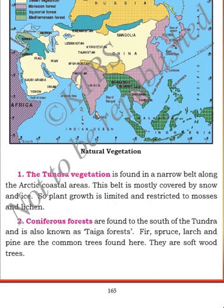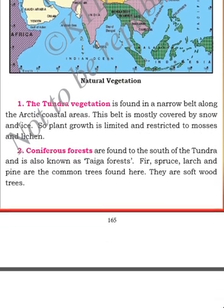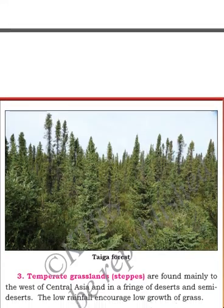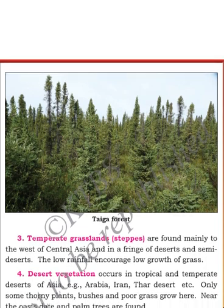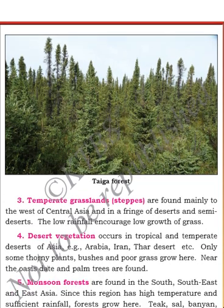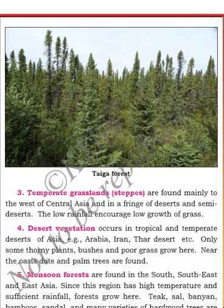In some areas of Asia where rivers flow, you can see forest areas — this is the taiga forest. Next is the temperate grassland, that is the steppes, which is mostly found in central and western Asia, including areas of spring deserts and semi-deserts.